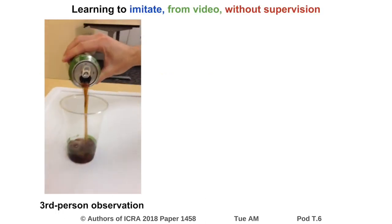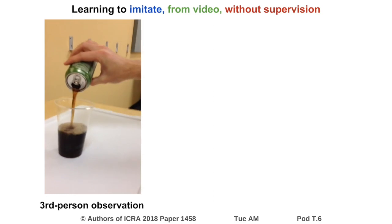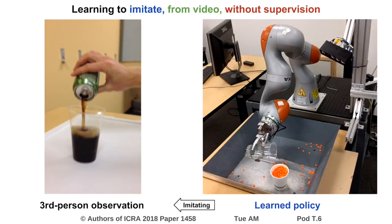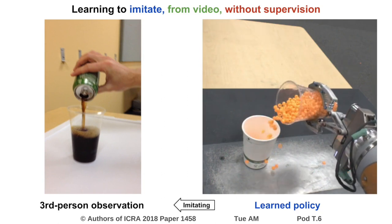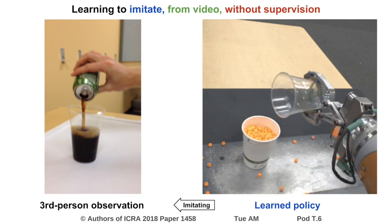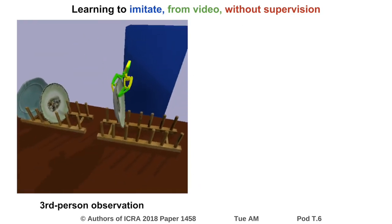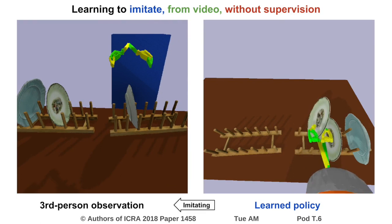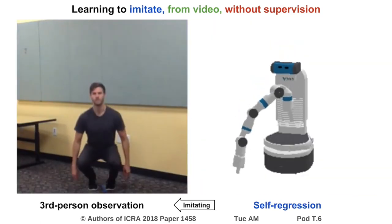In this work, robots can learn new tasks by watching a single third-person demonstration by a human, along with an unstructured and unlabeled collection of videos. Besides this single video demonstration, no supervision is provided to the system. We demonstrate the same approach on a diverse set of tasks with real and simulated robots: a pouring task, a dish placement task, and a pose imitation task.